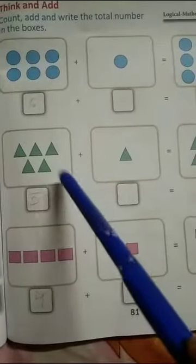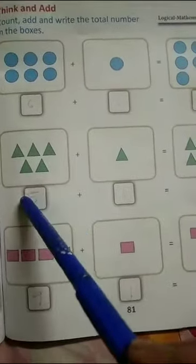Okay. Count and add. Write the total number. 5, 1, 6. 4 plus 1, 5.